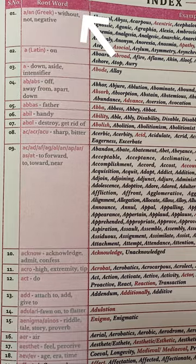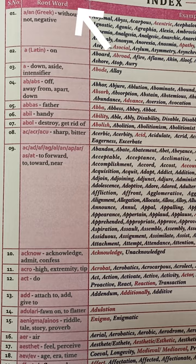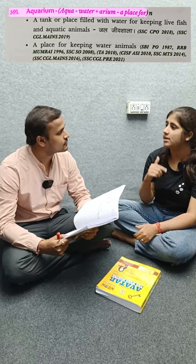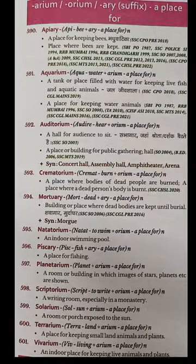A root word is a technique where we can easily remember many words from one root. For example, in 'aquarium', 'aqua' means water and 'arium' means place for — so aquarium refers to a place for animals that live in water. 'Aqua' and 'arium' can also be used to remember many other words. Wow, so vocab can be learned this way too!